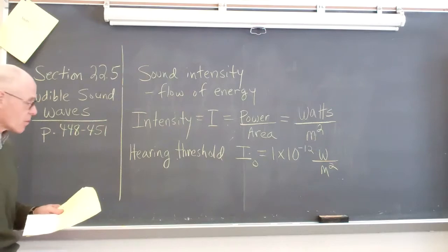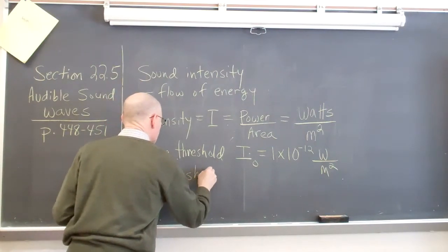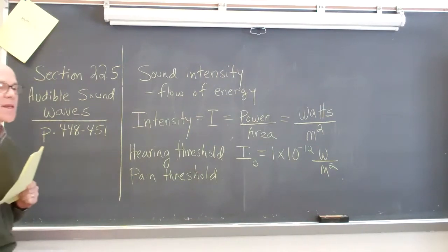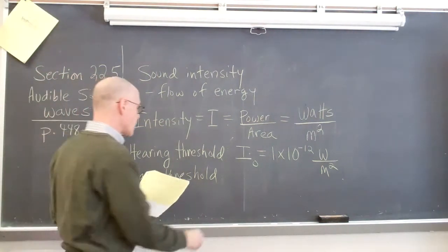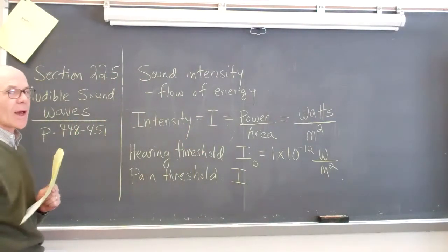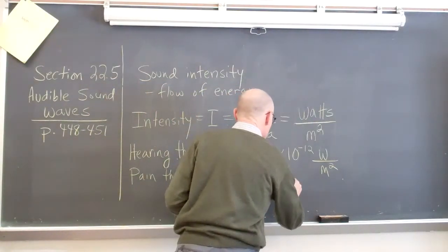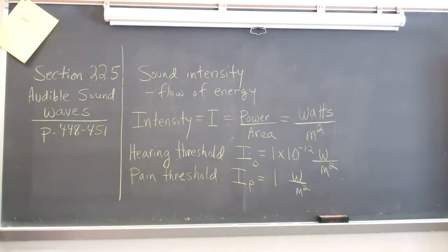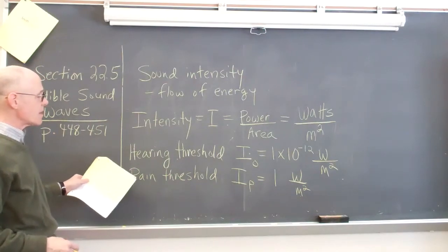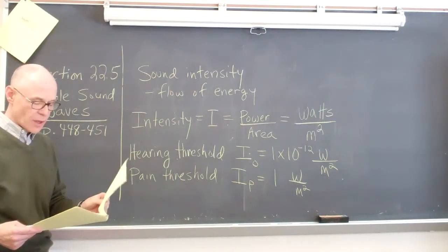Then at the other end of the spectrum, there's something called the pain threshold. It's that intensity of sound at which it hurts you. It will hurt your ear to listen to it. And we'll give that a capital I with a subscript P. And that will be 1 watt per square meter. Considerably higher. That's the maximum intensity. Pain threshold is actually the maximum intensity that the ear can withstand without feeling pain. Just a little above 1 watt per square meter, then it will become very uncomfortable.